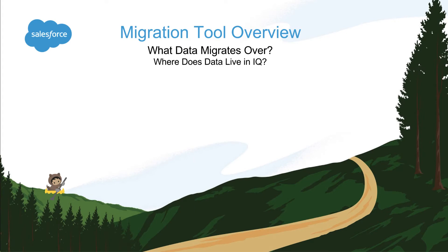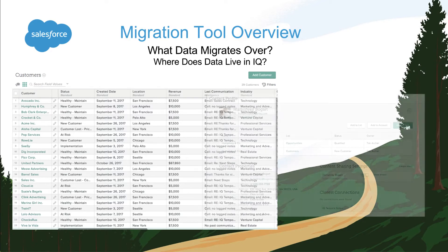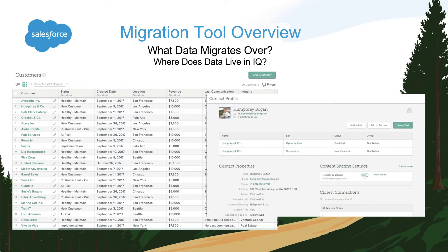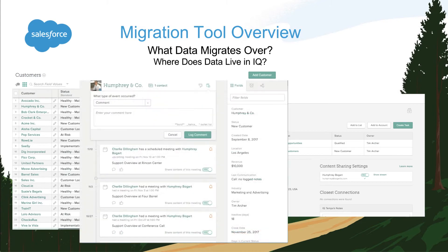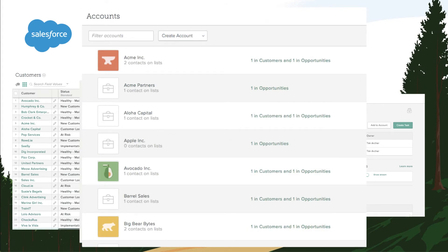Next, I want to take a minute to remind everyone where your data lives in SalesforceIQ. You're probably very familiar with our lists, where the majority of your data most likely lives. There is data that also lives in the contact and account profile pages. Any manually logged events or email communications live in the stream. And lastly, we have the contact and account galleries as well.